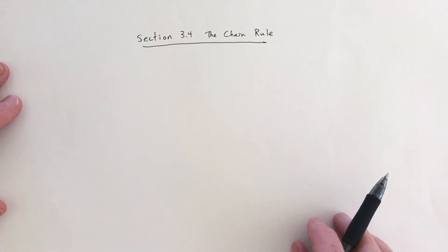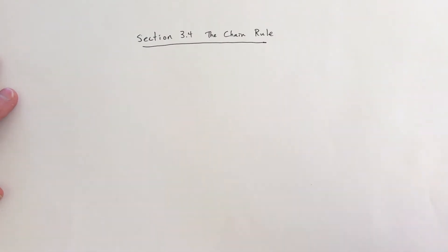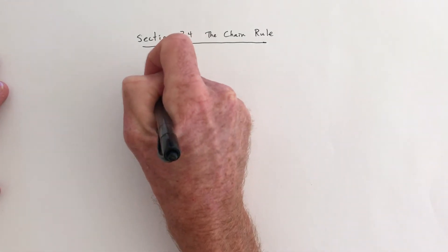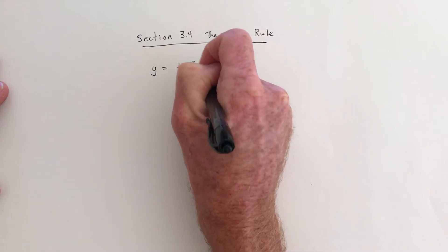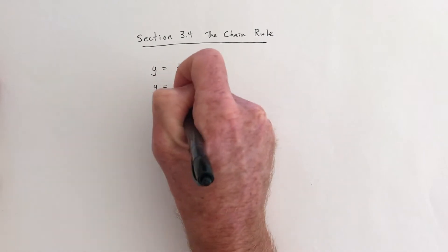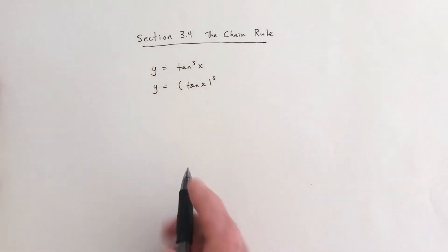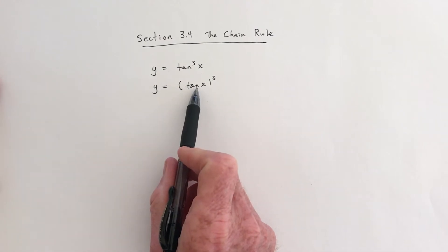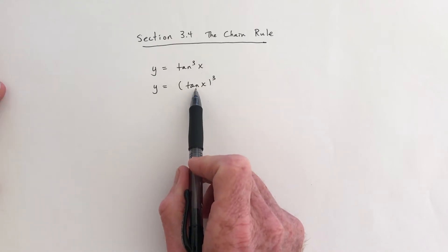Section 3.4 is about the chain rule. Looking at the homework, they asked you to do it in a slightly different way than I do. First let me show you my way. Suppose you have the function tangent cubed. Another way to write that is tangent of x being cubed — this just emphasizes that this is two functions: one is the cube function, one is the tangent function.